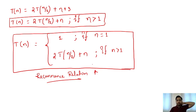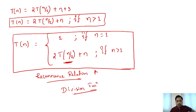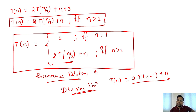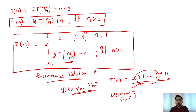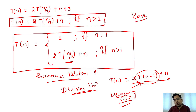There are two types of recurrence relations. The first is the division type, like T(n/2), where we divide n. The second is the decreasing type, like T(n−1), where we subtract from n. Both types approach the base condition — this is why they are used.